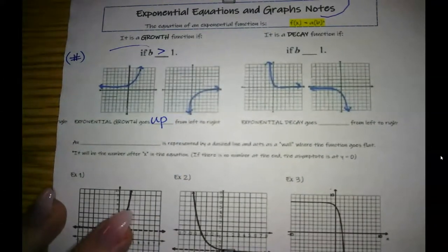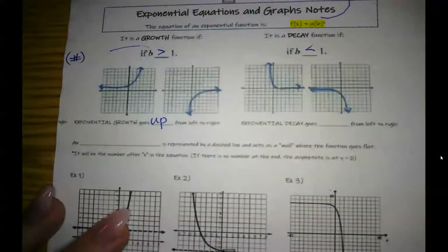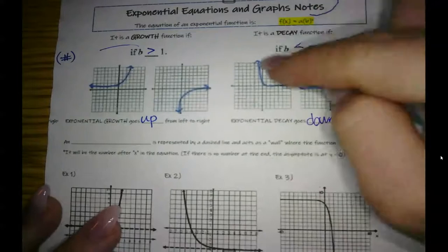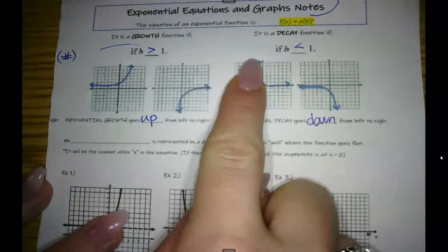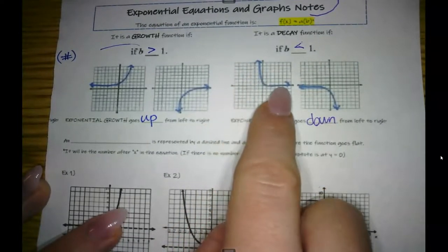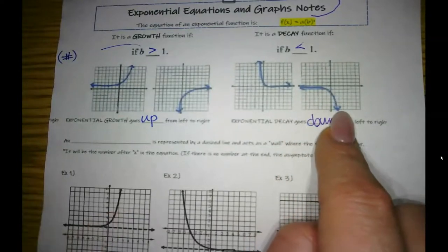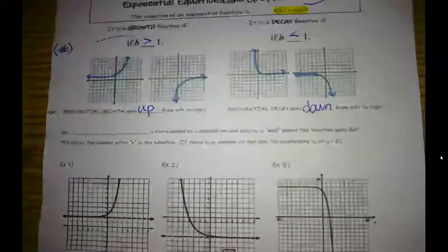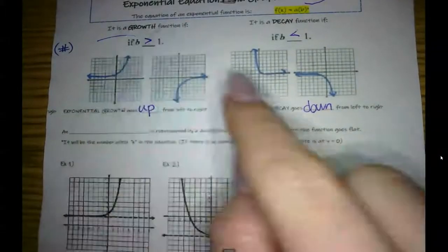So then the flip side is true for the decay function. Then my B, my number inside my parentheses, is going to be less than one. So our exponential decay goes down. So whenever I trace from left to right, still same process. I'm starting at the left because that's where we start reading from. And then my finger's going down. I'm starting at the left and my finger's going down. So it's decay. So there is no reason for you to remember or memorize what these graphs look like to determine whether they are growth or decay. Take your finger from the left to the right, up, growth. Left to the right, I'm going down, decay. Easy as that.